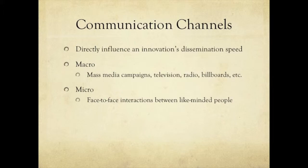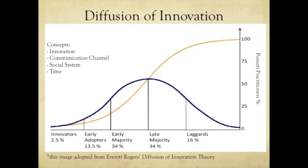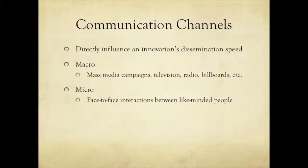The next concept is communication channels. In Evert Rogers' theory, this refers to what directly influences how we get on that S-curve from when nobody's utilizing the Ponseti method until everybody is. There are two basic forms of communication Rogers describes: the macro level — mass media campaigns, television, radio, billboards — and the micro, which describes face-to-face communication between like-minded people.